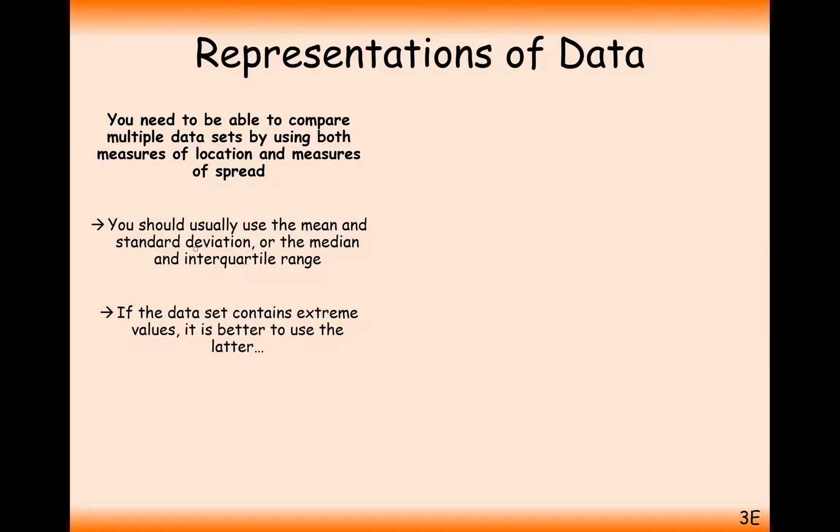It's always best to use the mean and the standard deviation. They're probably the most accurate averages that we have. But if your data does have extreme values, highs or lows, then probably the median and the interquartile range will cancel those out. So in that case, that probably will be better.